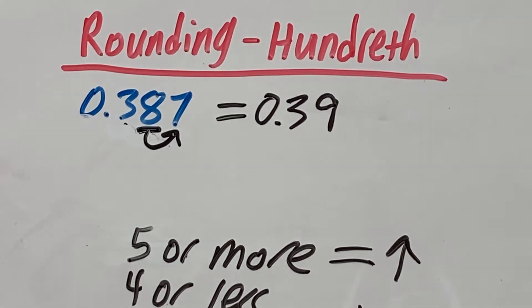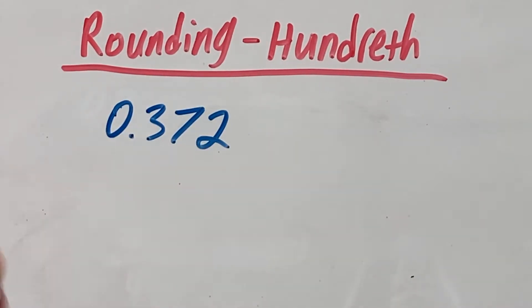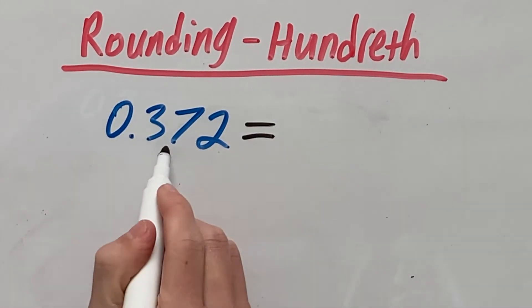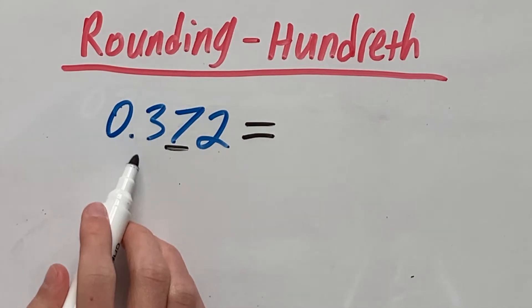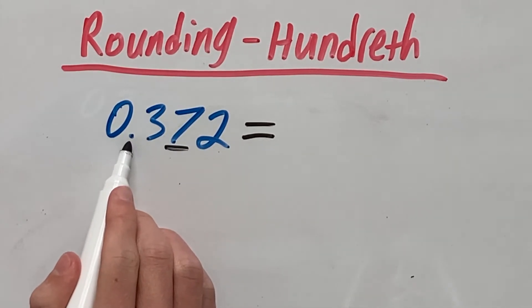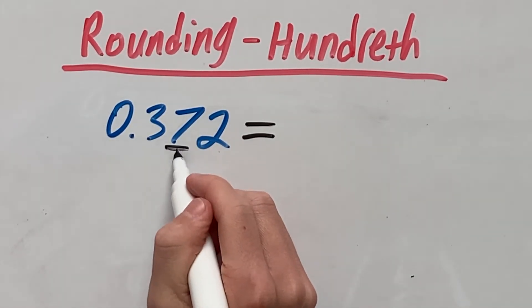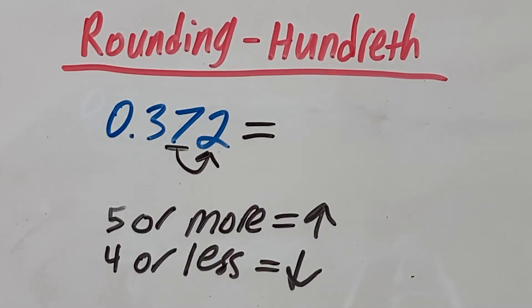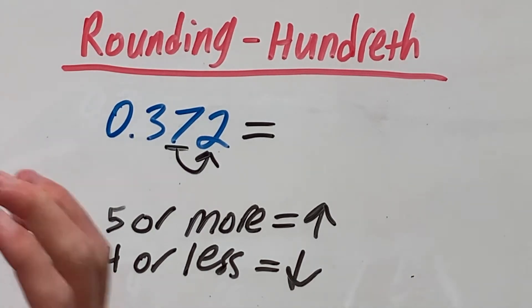Let's look at another example. Now we have the example 0.372. The hundredth place is the 7 because it's two places to the right of the decimal. And the number right next door is 2. And we look at our rules. Is 2 five or more or 4 or less? Because 2 is 4 or less, we round down.